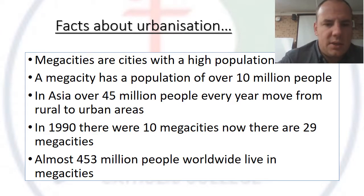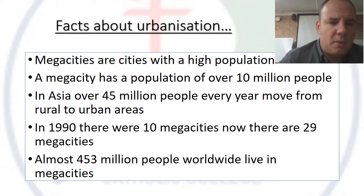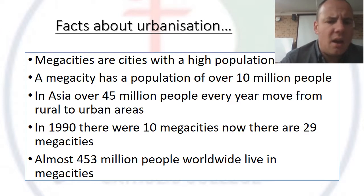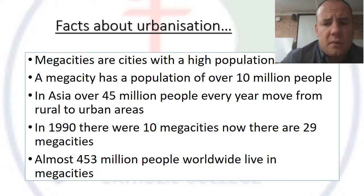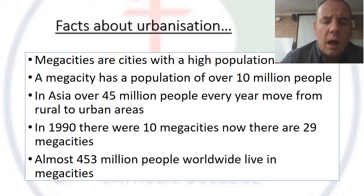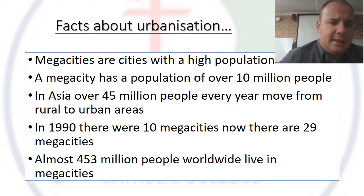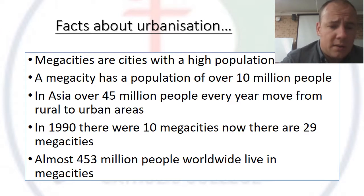As a consequence of rapid urbanization — the rapid movement of people — we now have what are called mega cities. Mega cities are cities with a very high population of over 10 million. We don't have any in Australia. To put it in perspective, 10 million is like Sydney and Melbourne all living together in one city.